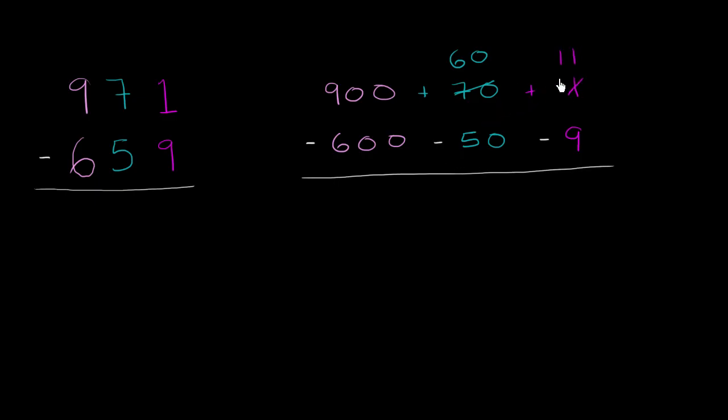Notice, I have not changed the value of the number. 971 is the same thing as 900 plus 60 plus 11. It's still 971. And now we can actually subtract.